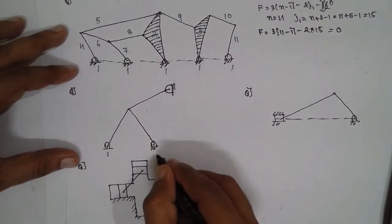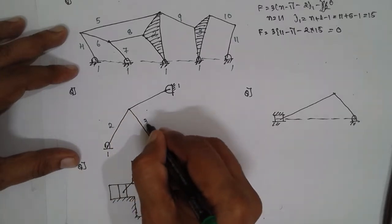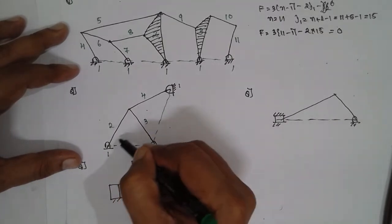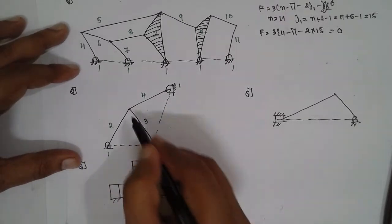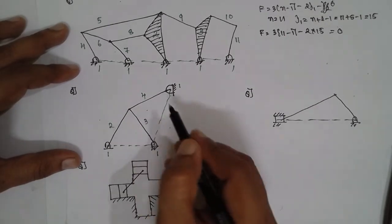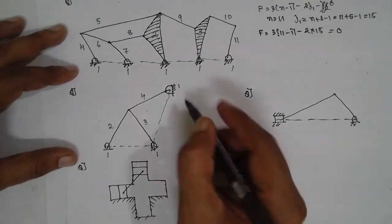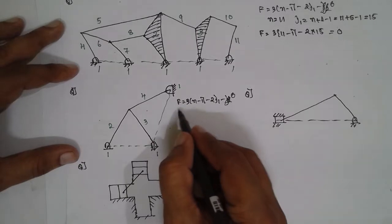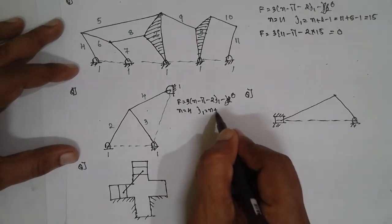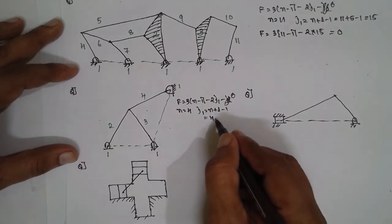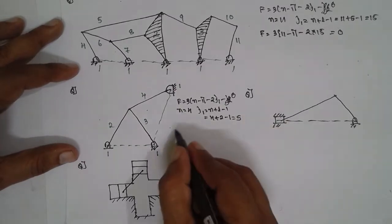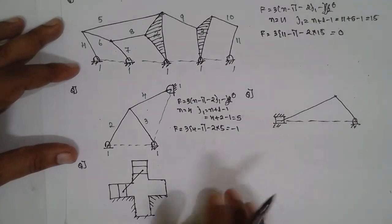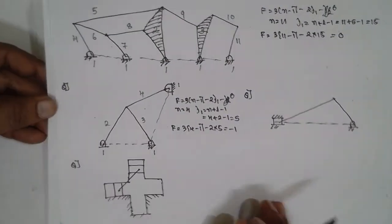Next problem. Links: fixed links 1, then moving links 2, 3, 4 — n = 4. j2 = 0. Note: a loop must be completely enclosed empty space. Drawing a dotted line here crosses an existing line, so it does not form a valid loop; there are 2 loops. j1 = 4 + 2 − 1 = 5. f = 3(4 − 1) − 2(5) = 9 − 10 = −1. We call this a superstructure.